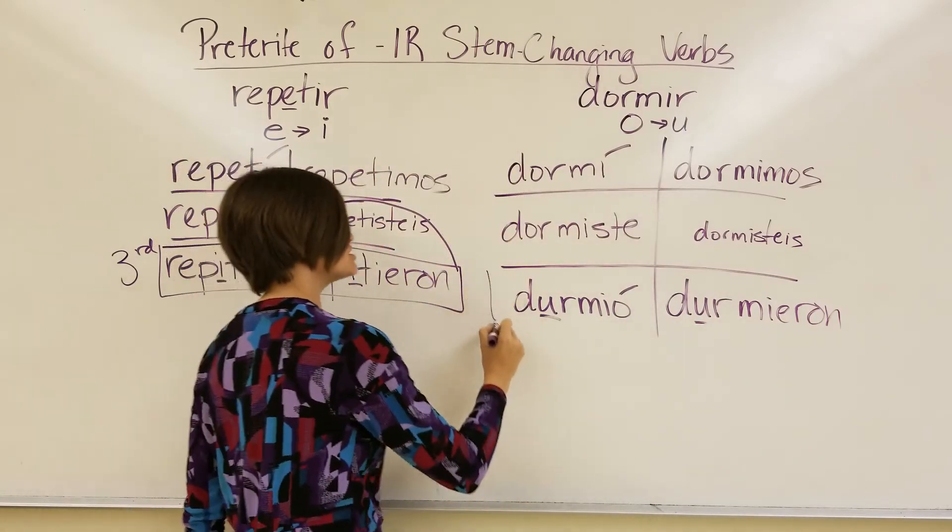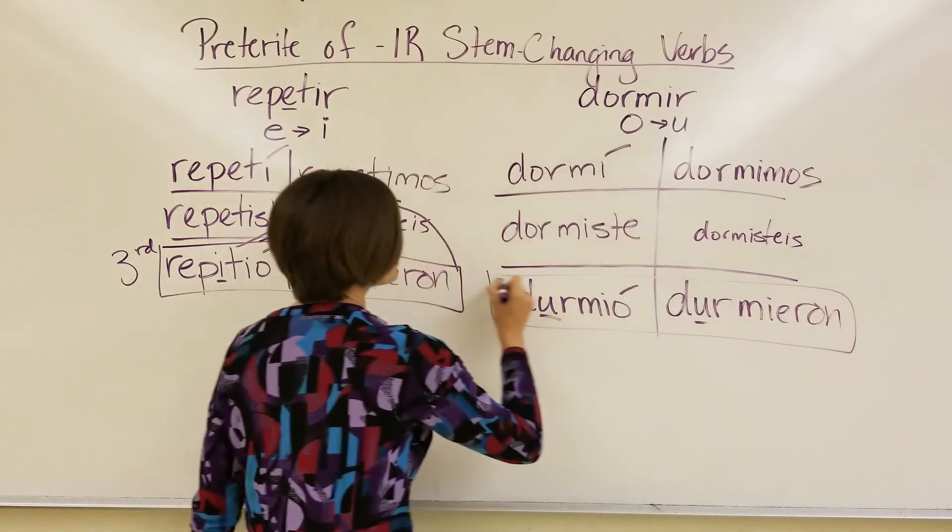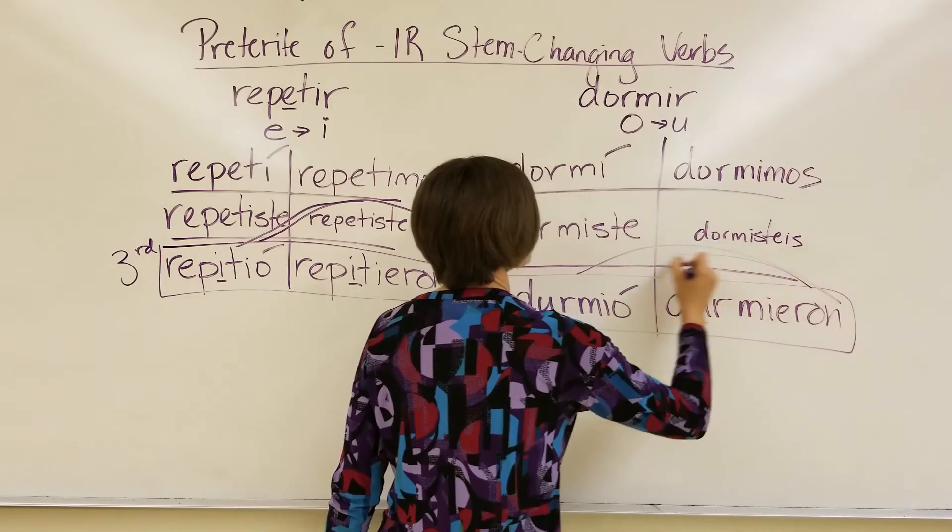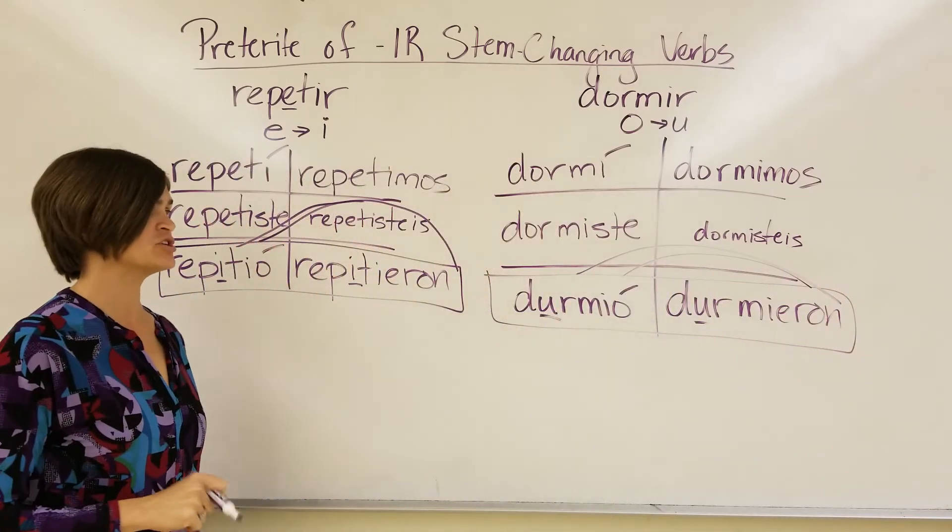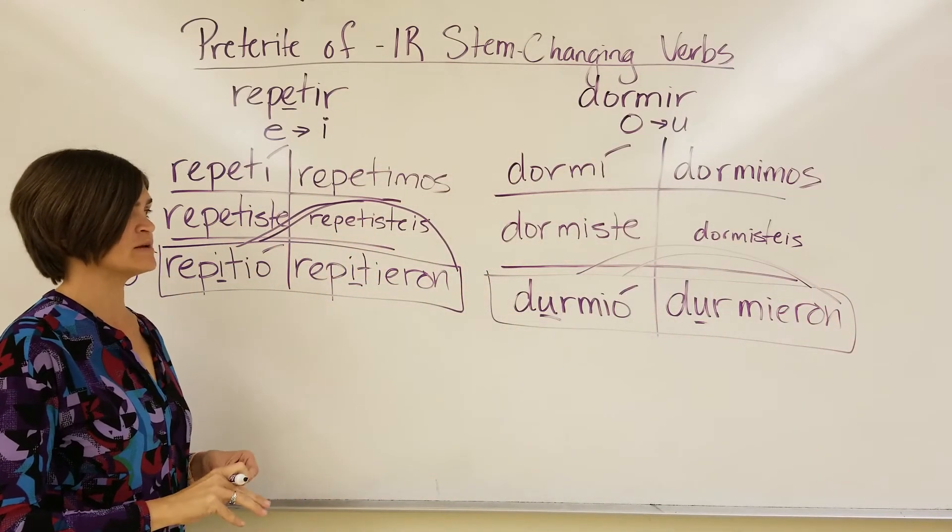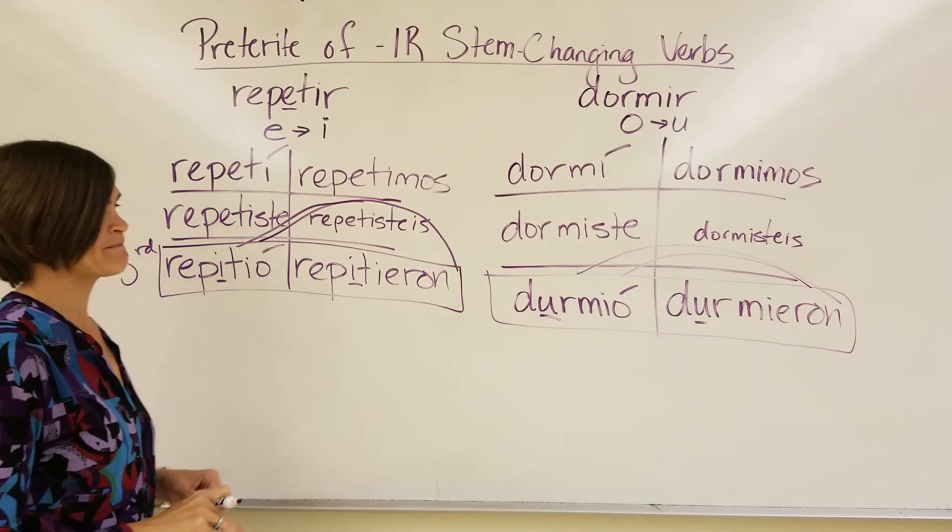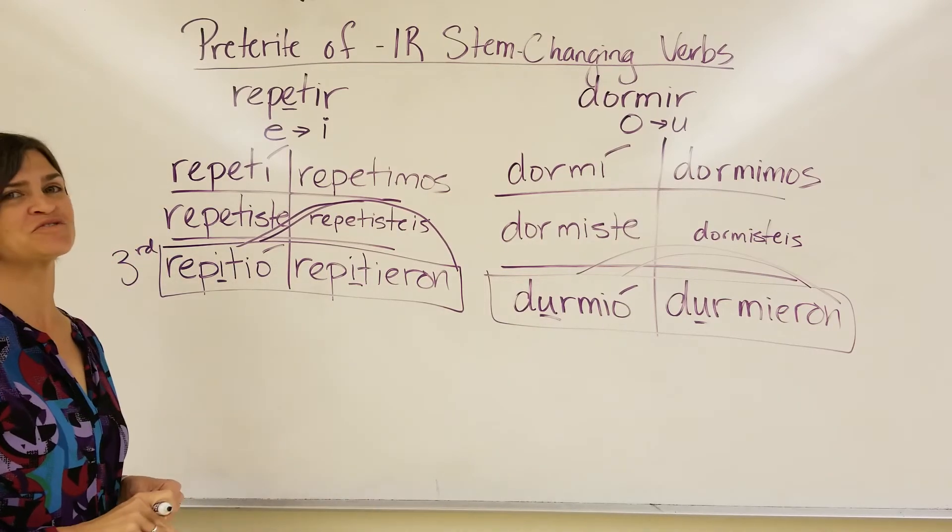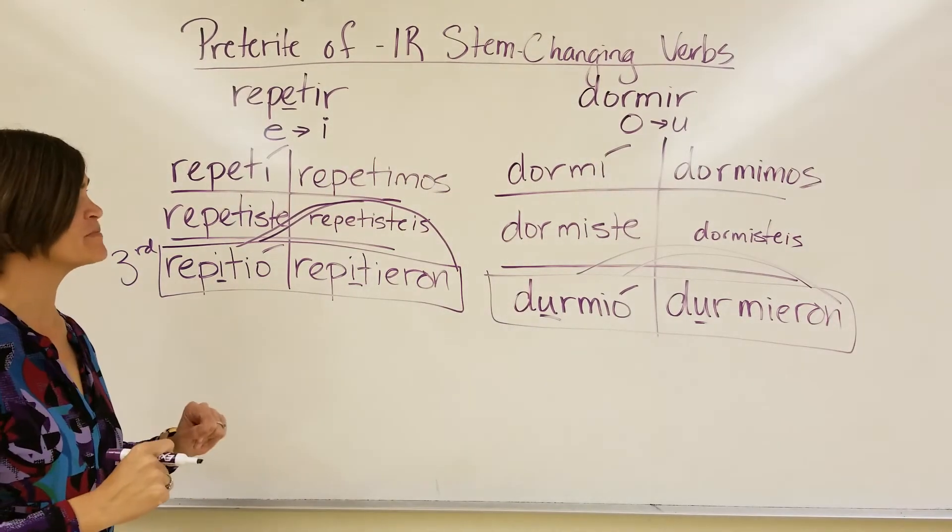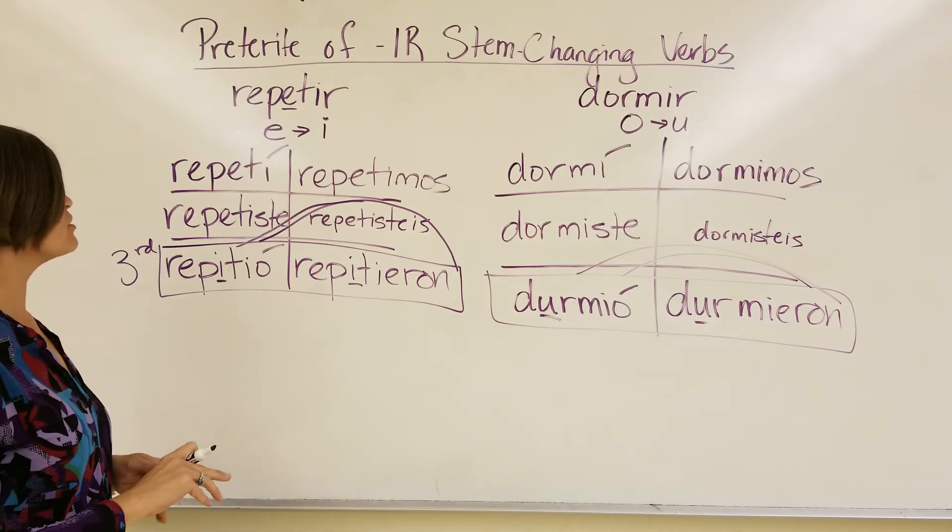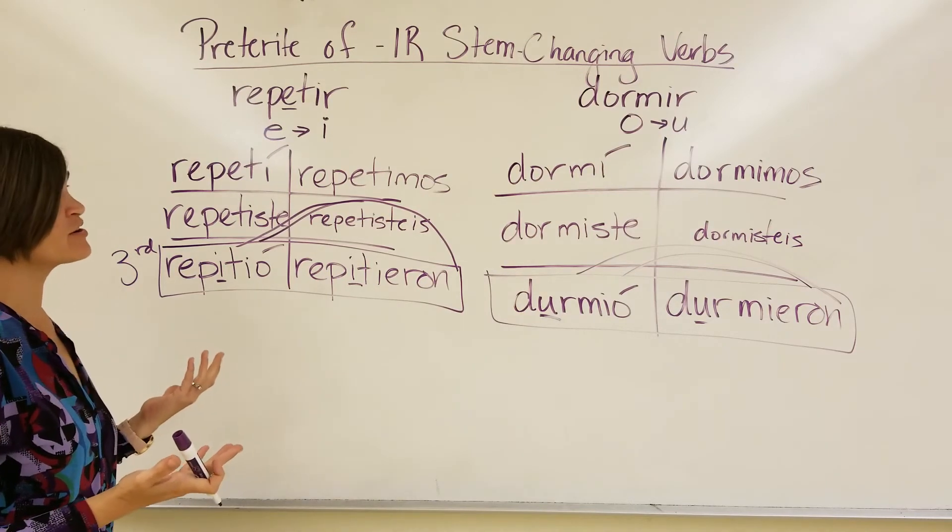Once again, just here, in the sandal section, do we have a change from an O to a U. Man, these notes are immense. All right, so that's how we do the preterite of IR stem-changing verbs.